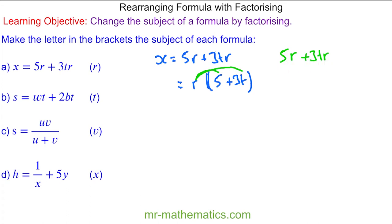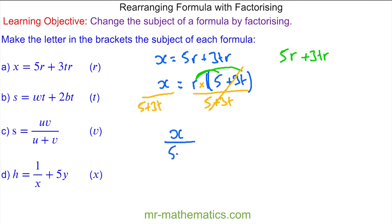When we factorise this we have 5r plus 3tr, which is the same as where we started, so this is equal to x. We're going to divide both sides by 5 plus 3t — the divide and multiply will cancel — so x over 5 plus 3t is equal to r, and r is now the subject.